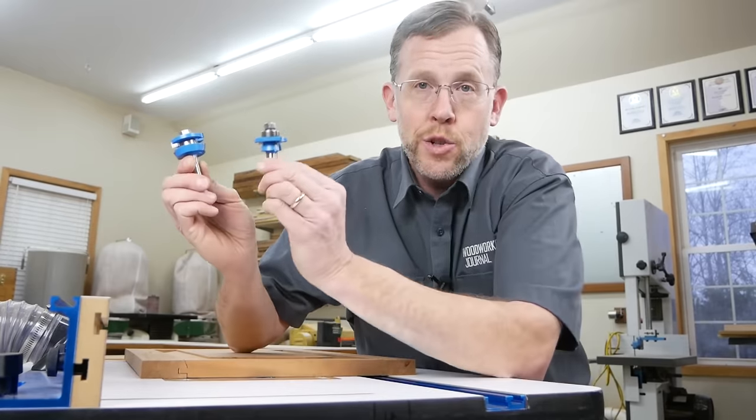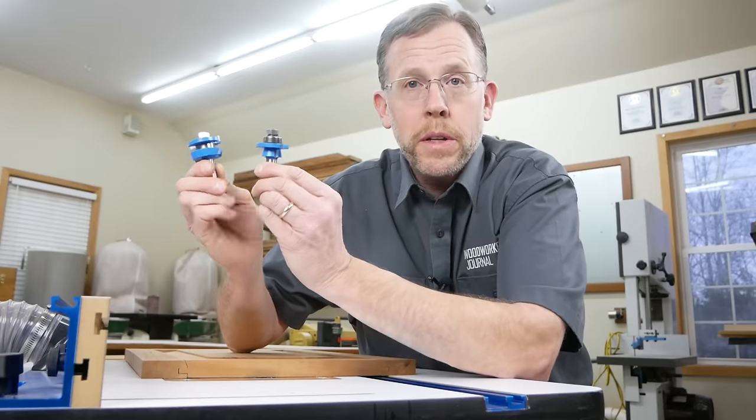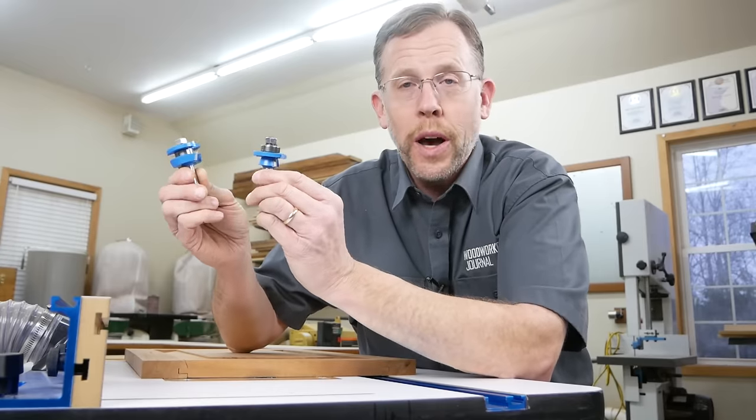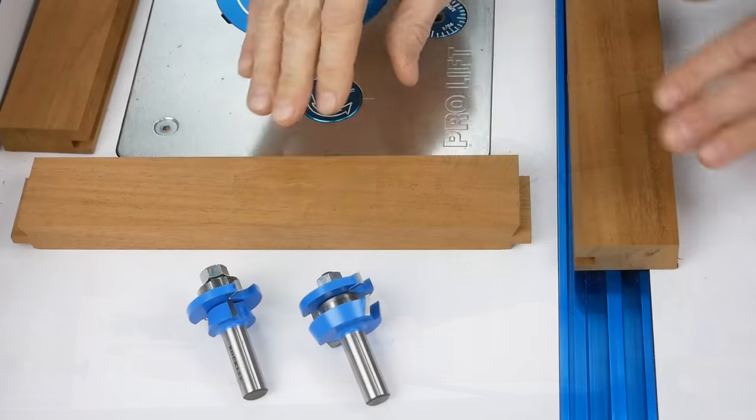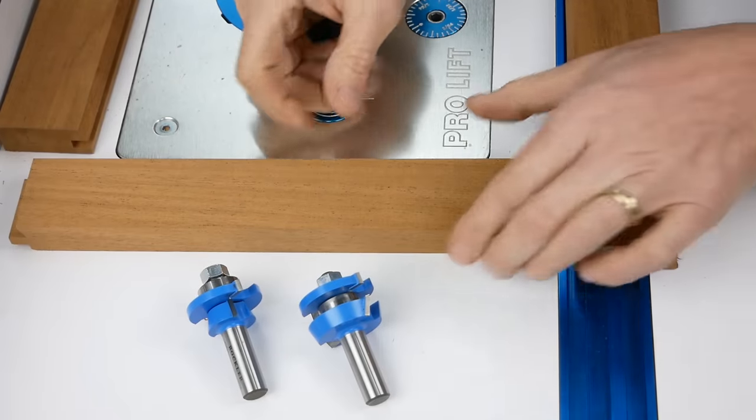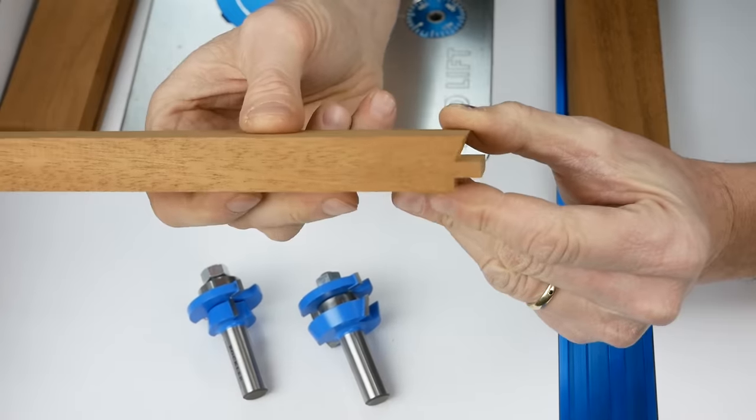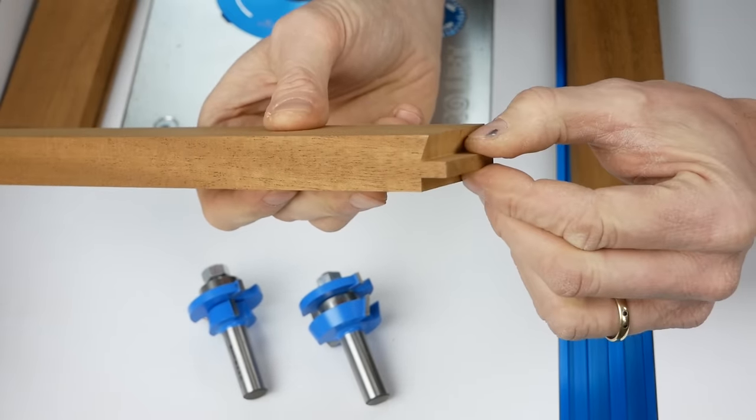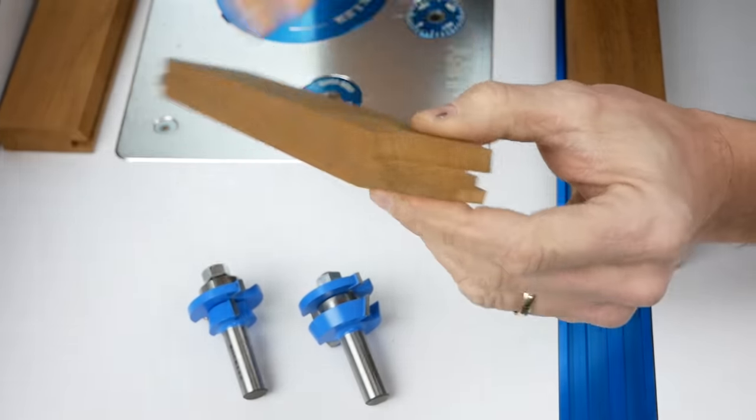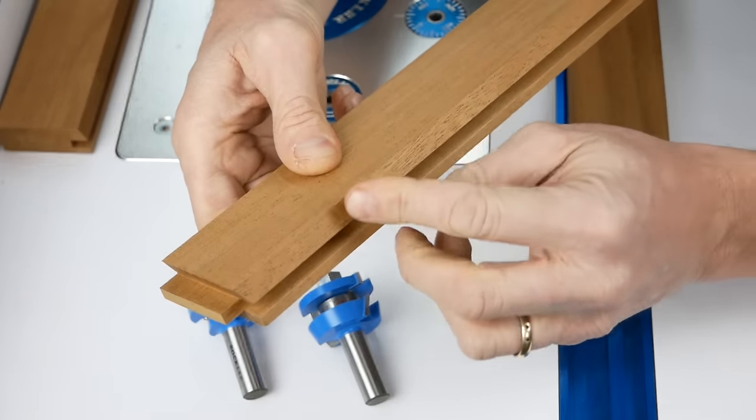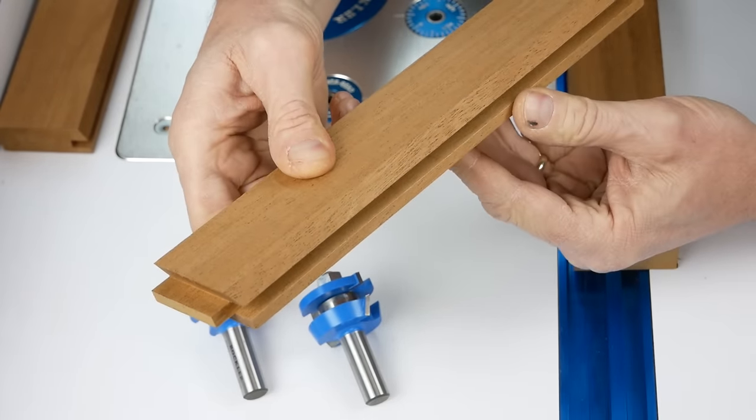Honestly, I think the trickiest thing about using cope and stick bits is figuring out which bit does what. So let's take a closer look at that sample rail and style again. Here's the rail with the tongue on the end. It also has this cut here, which is the mirror opposite of the profile cut along the front edge of the door.